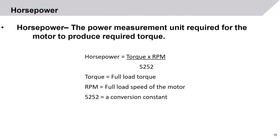One unit of measurement for motors is horsepower — the power measurement required for the motor to produce the required torque. It is the output of the motor. Horsepower is defined as torque times RPM divided by 5252. The torque is the full load torque required to move the load. The RPM is the full load speed of the motor — whether 3600, 1800, 900, and so forth. The value 5252 is a conversion constant in the electrical world.